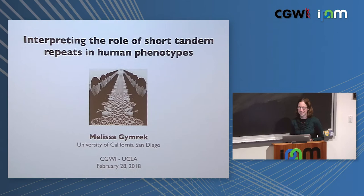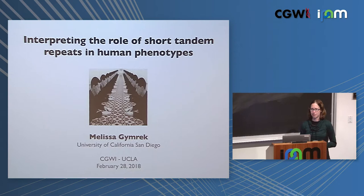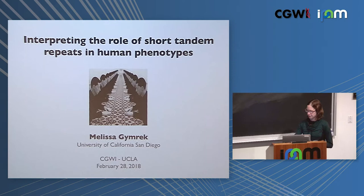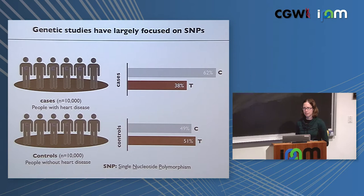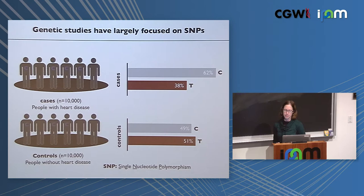Our lab does a lot of work on short tandem repeat variation, or STRs. These are pretty tricky regions of the genome to analyze, bringing up a lot of fun problems to solve. Most programs in the world have only been built with SNPs in mind. Most of us know about genome-wide association studies, or GWAS, which have been successful in identifying regions of the genome associated with different human conditions, focusing on SNPs — single nucleotide polymorphisms.